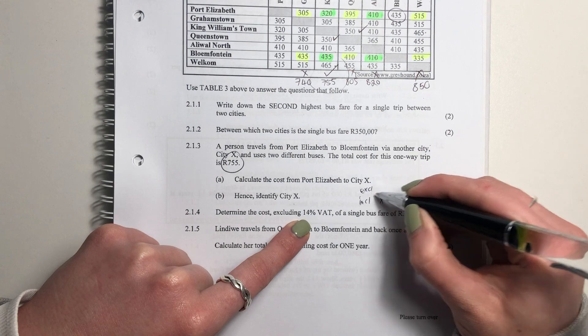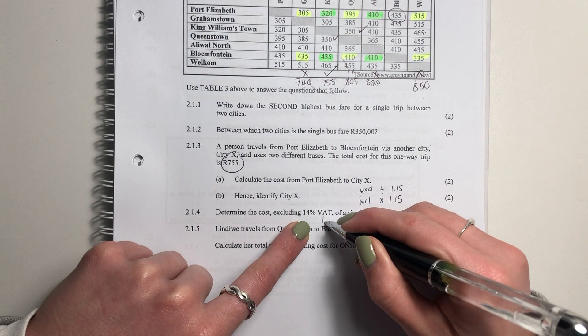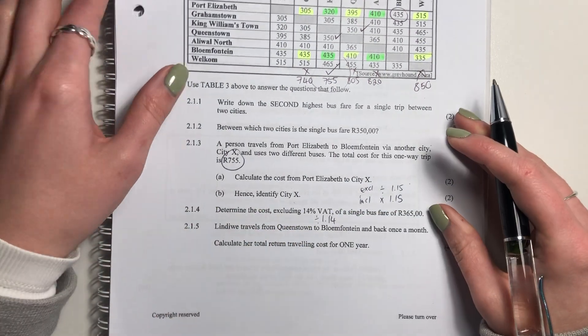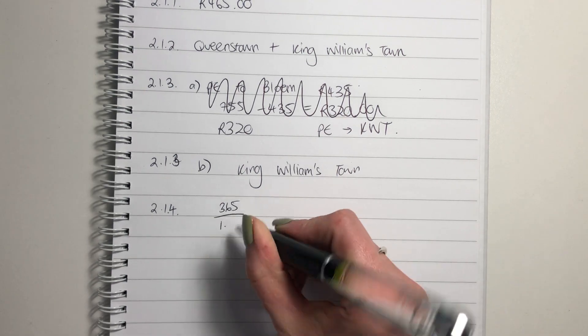If you're excluding, you divide by 1.15. Okay? Because we're excluding, we're going to divide by 1.14. So we're going to put that in. We're going to say 365 divided by 1.14.